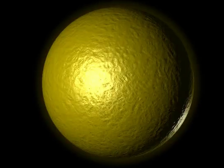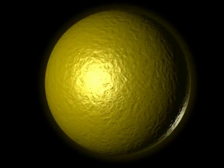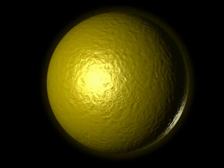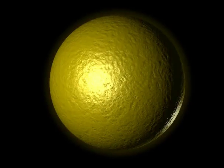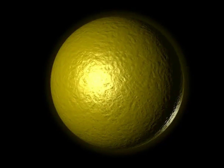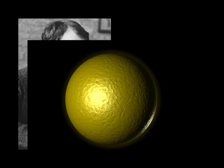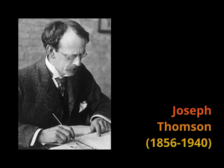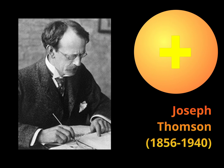Atom in Greek means something impossible to divide. The Greeks thought that atoms could not be divided into smaller pieces, but they are the most basic elements of matter. At the beginning of the 20th century, Joseph Thomson imagined an atom as a kind of cake.